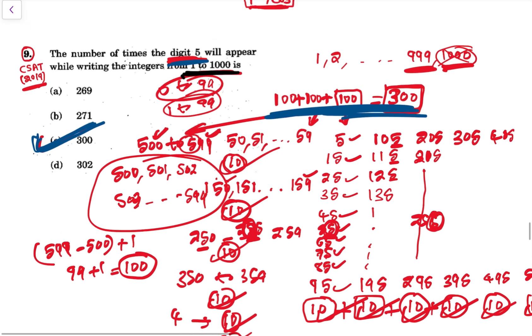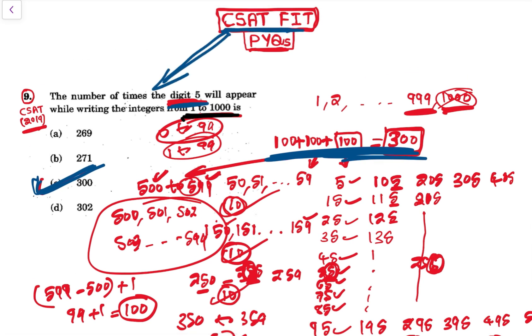So option C, 300 is the answer. If you want, you can watch the complete class on digit occurrence. This complete class is available on the CSAT Fit course. You can click on the link given below in the description. One course covers your entire CSAT paper, maths, logical reasoning, and reading comprehension. Follow CSAT Fit course and your CSAT paper will be done and dusted. Thank you.